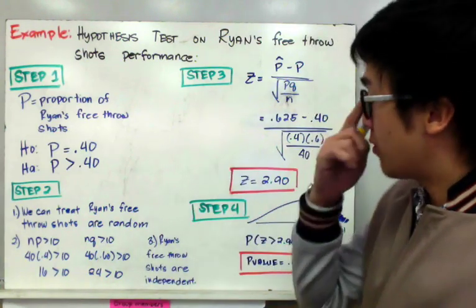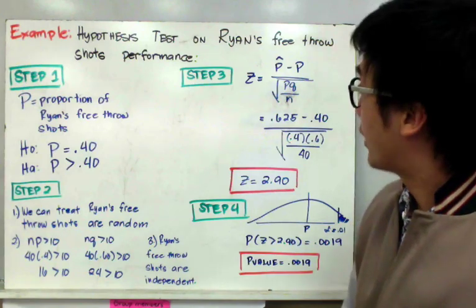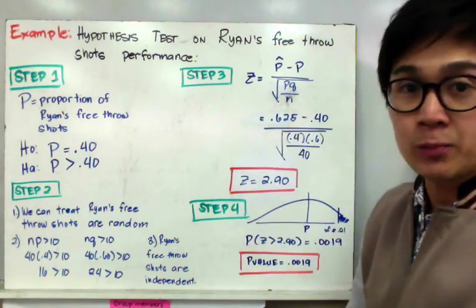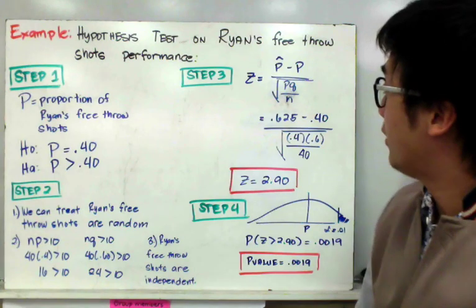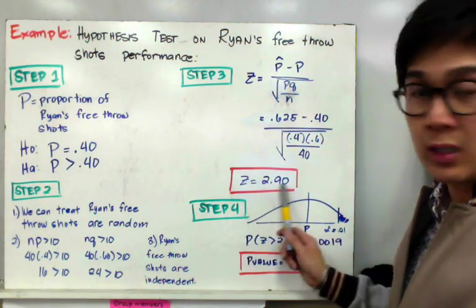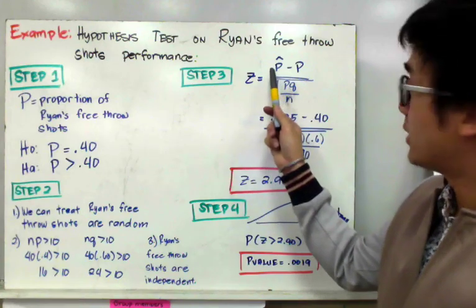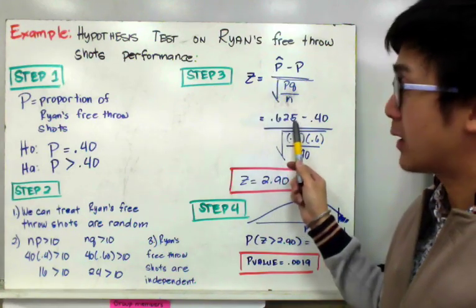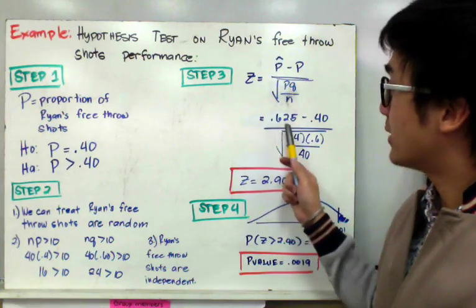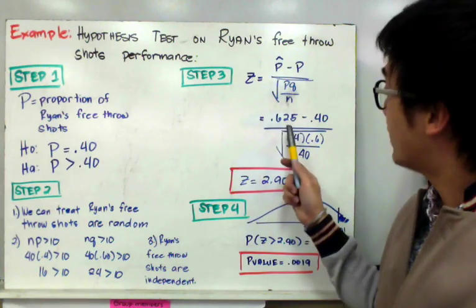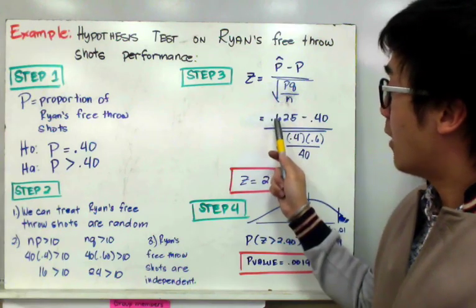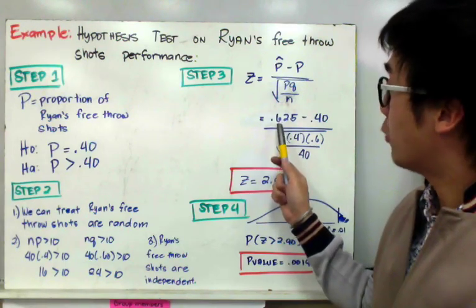For step three, our calculation: we use the test statistic z equal to p-hat minus p, all over the square root of pq divided by n, which gives us z equal to 2.90. Our p-hat is 0.625, because 25 divided by 40 equals 0.625. This is p-hat based on Ryan's performance in the word problem.